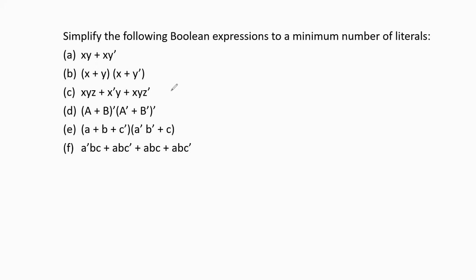Hello guys, today we will discuss the problem related to Boolean algebra: simplify the following Boolean expressions to a minimum number of literals. Before we start the simplification, let us know about the literal. A literal means any input variable available in normal form or complement form, any number of times in a given Boolean expression, is called a literal.